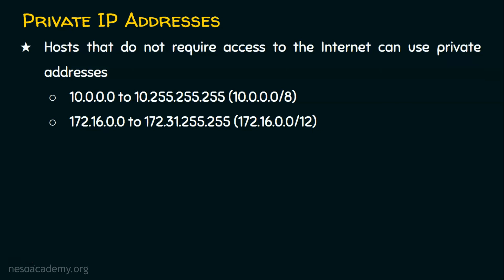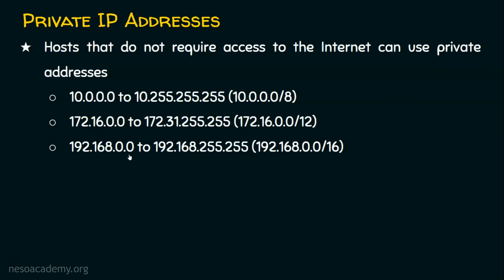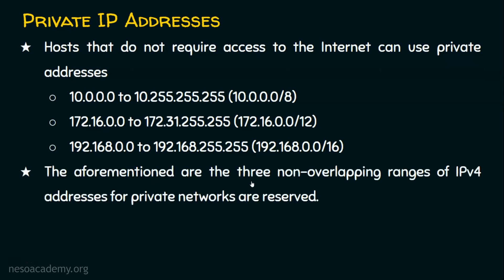We also have a private IP address range in Class C, which is 192.168.0.0 to 192.168.255.255. The network address is 192.168.0.0/16, meaning the first two octets must match — anything starting with 192.168 belongs to this private network. These private IP addresses do not require access to the internet. If you don't use NAT technology or a proxy server and you assign this address to a device, it will not be recognized on the internet and you will not get internet connectivity, because these private IP addresses are blocked — routers on the internet will not forward those requests.